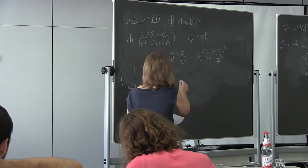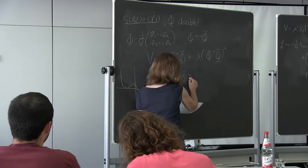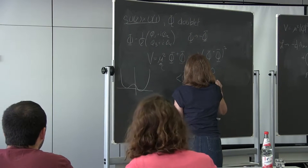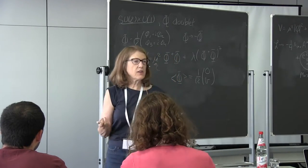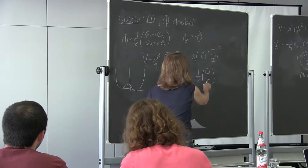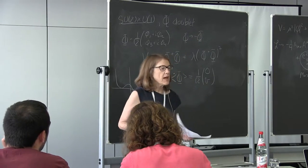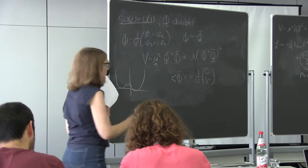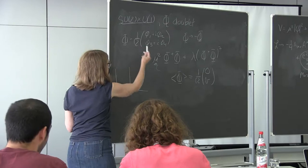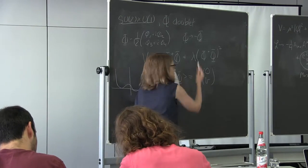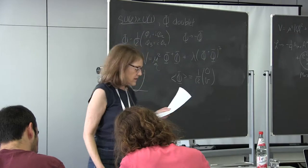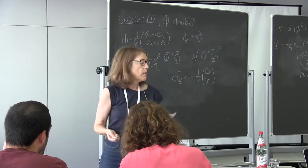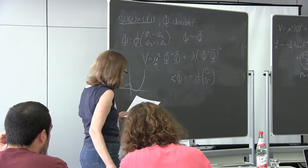We define the minimum of the potential by minimizing it: ⟨φ⟩ = 1/√2 (0, v). This choice in SU(2) space — picking the potential minimum at the bottom of the doublet — defines a direction in SU(2) space and breaks the symmetry. This is an arbitrary choice, and this is in unitary gauge since we've neglected Goldstones.